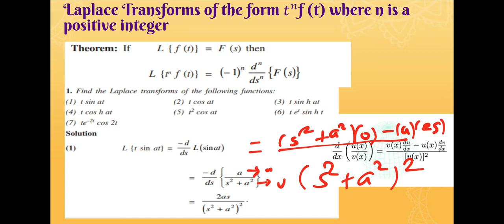After differentiation: the numerator gives 0 minus 2as, and with the negative sign in front, minus into minus gives plus. So the result is 2as divided by (s² + a²)².